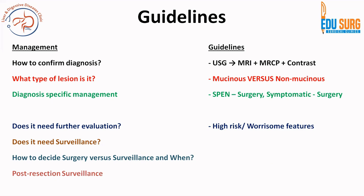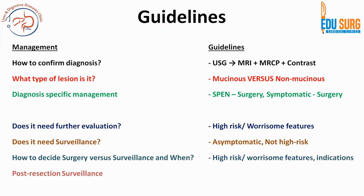For all mucinous lesions, further evaluation is needed to identify high-risk and worrisome features. If the patient is asymptomatic, not high-risk, and the lesion is less than 2 cm, it is surveillance. If high-risk features are present, it is definitely surgery. If worrisome features are present, further evaluation and surgery are indicated. Main duct IPMN is a definite surgical indication. Post-resection surveillance is required only for IPMN — for MCN, the remnant pancreas is not at risk.